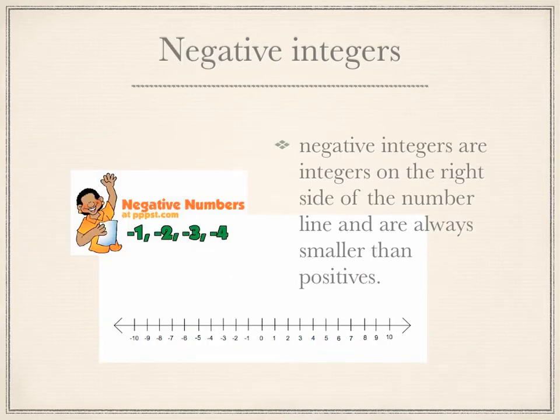Negative integers are integers on the right side of the number line and are always smaller than positives.